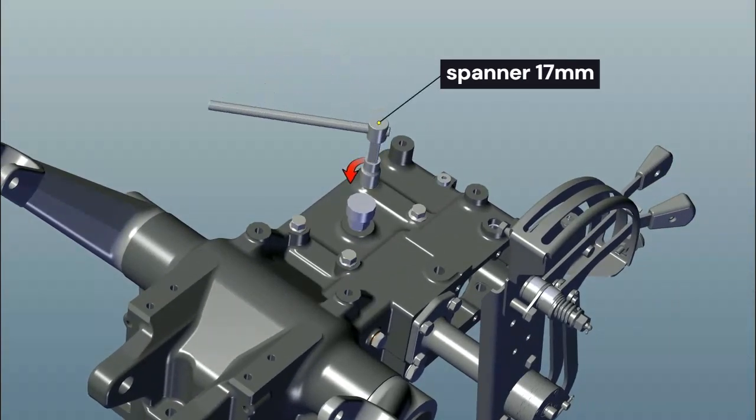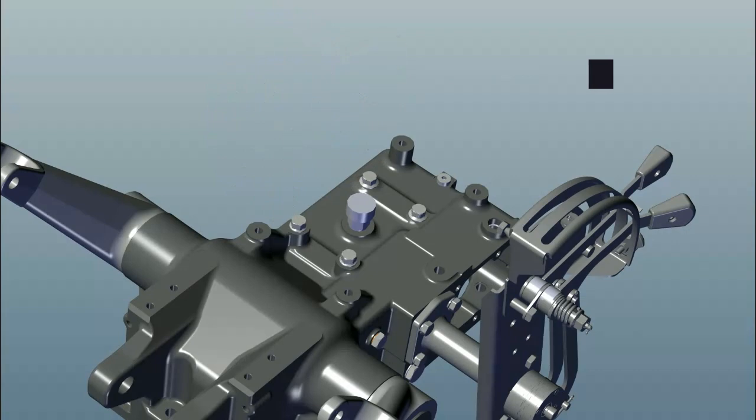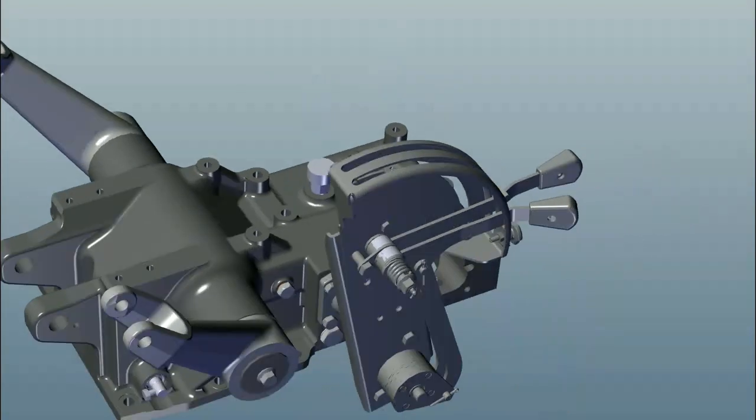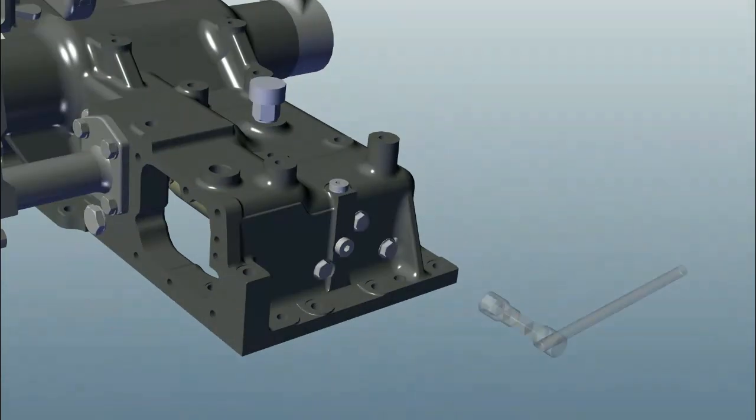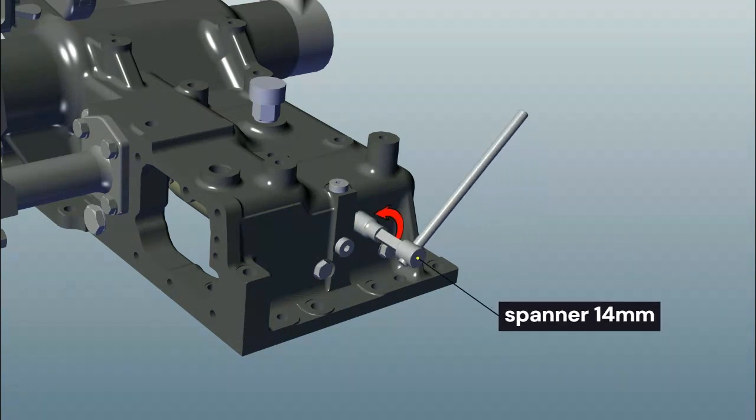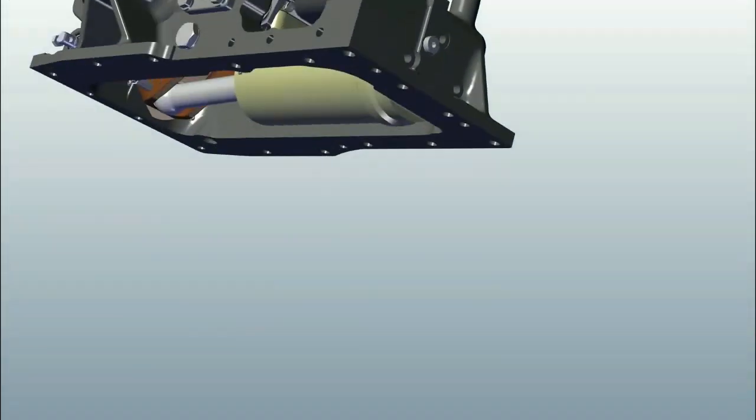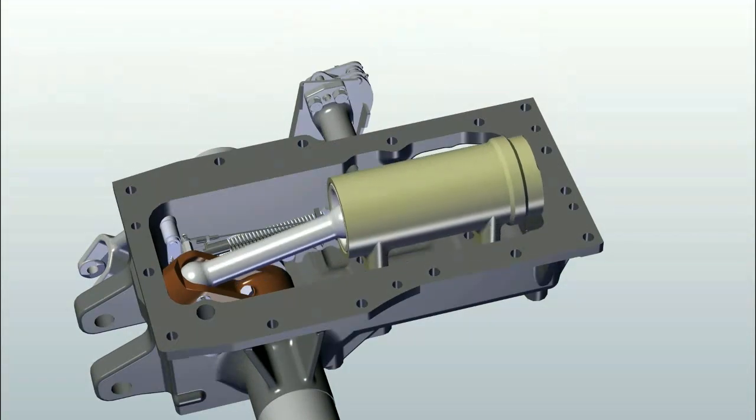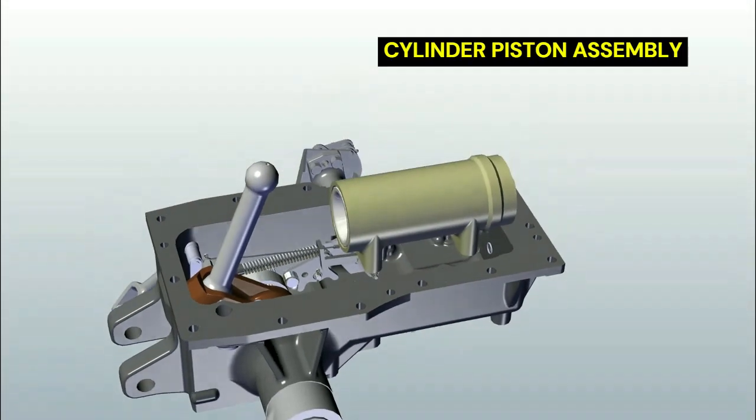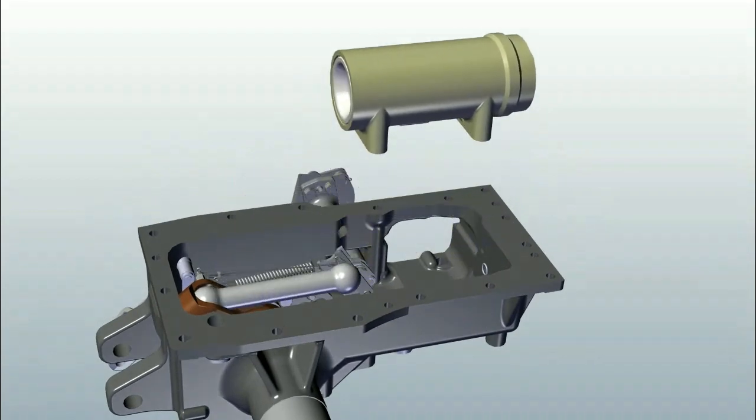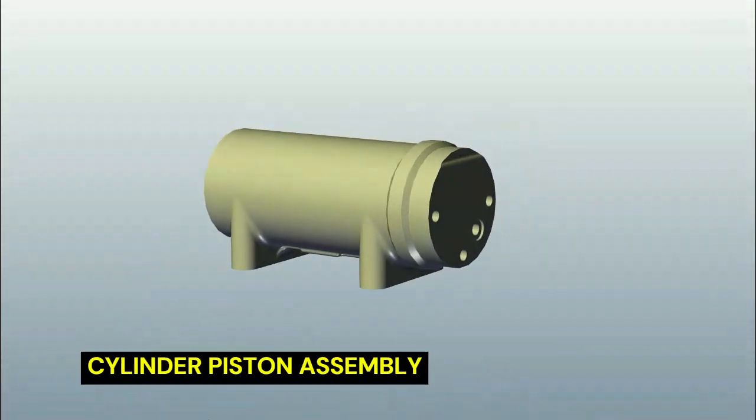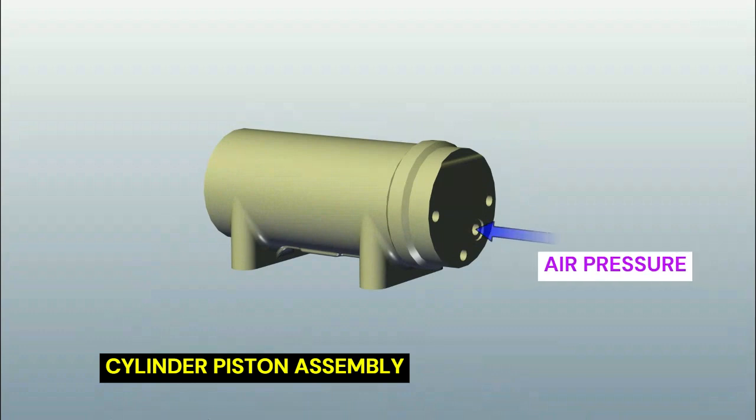Remove 4 numbers M12 bolts from top. Remove 3 numbers M10 bolt from front and trifurcation point. Remove cylinder piston assembly. Remove cotter pin.